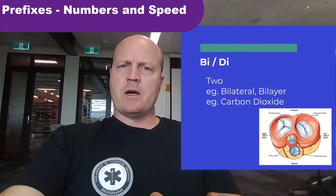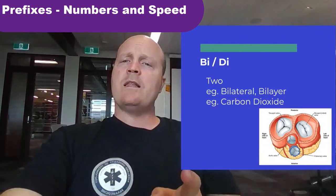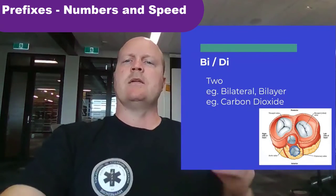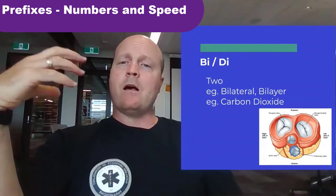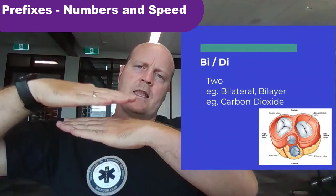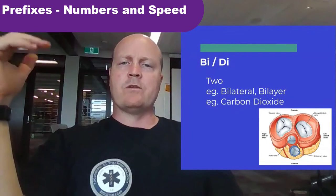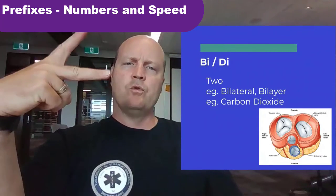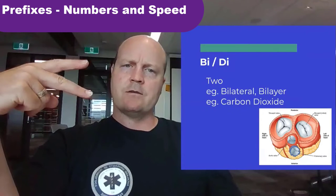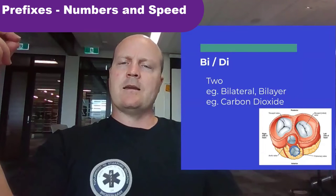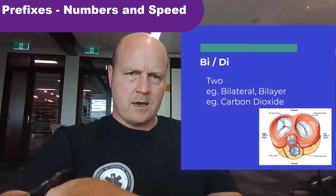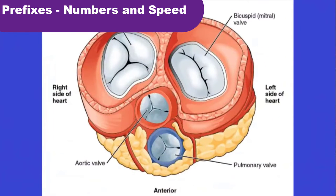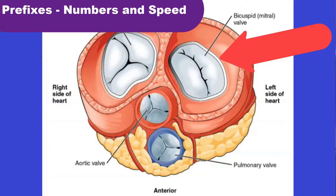Next up we've got bi and di, which mean the same thing — two. So if unilateral is one side of the body, bilateral is both sides. A bilayer is two layers of things. With di, carbon dioxide — the gas we breathe out — has two oxygen molecules, one carbon and two oxygen, which is where the 'dioxide' in carbon dioxide comes from. Looking at the heart, we've got the bicuspid valve, which has two flaps.